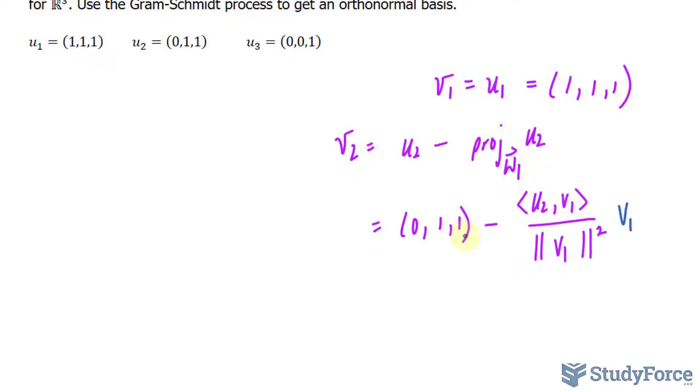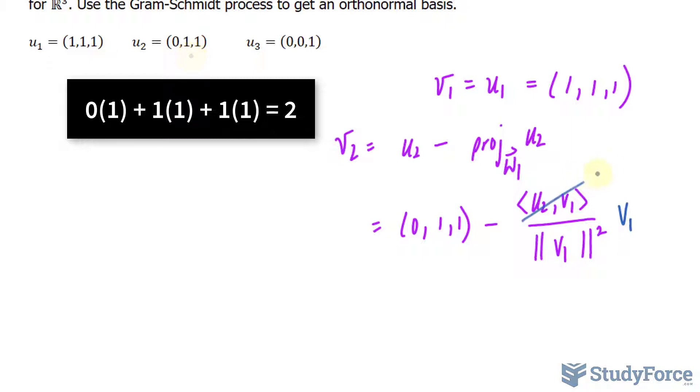Let's start off with the numerator. We need the inner product of U2 and V1. For that, we multiply each component, then sum that up. So 0 times 1 is 0, 1 times 1 is 1, 1 times 1 is 1. This part becomes 2.